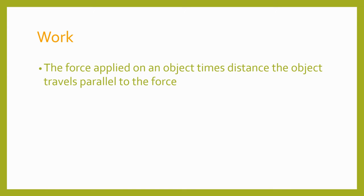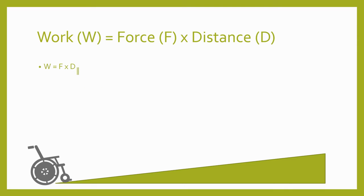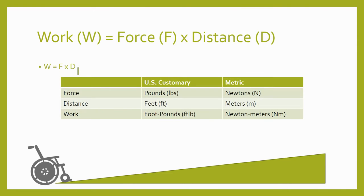Work is done whenever a force is applied over a distance. It's a quantifiable value derived by multiplying the magnitude of the force by the distance traveled parallel to the direction of the force. In the US, pounds are most commonly used to measure force and feet are most commonly used to measure distance, so the most common unit for quantifying work is foot-pounds.